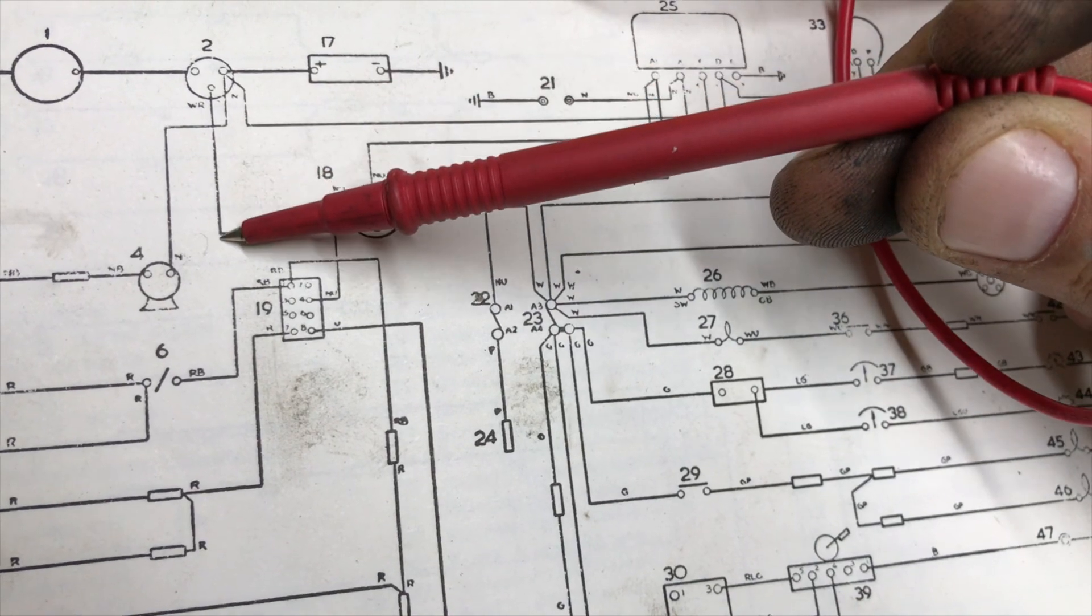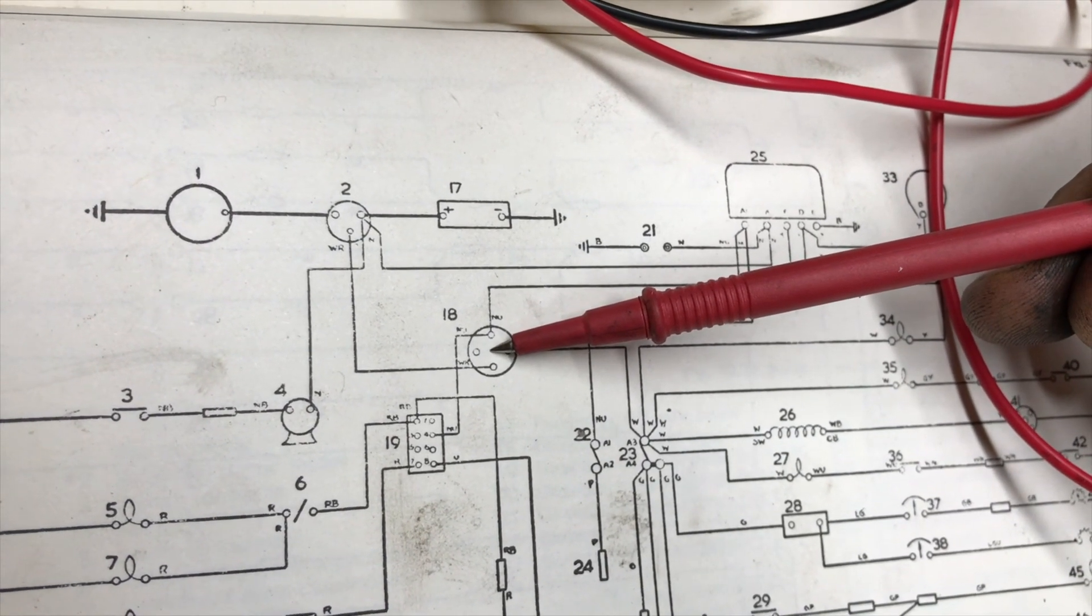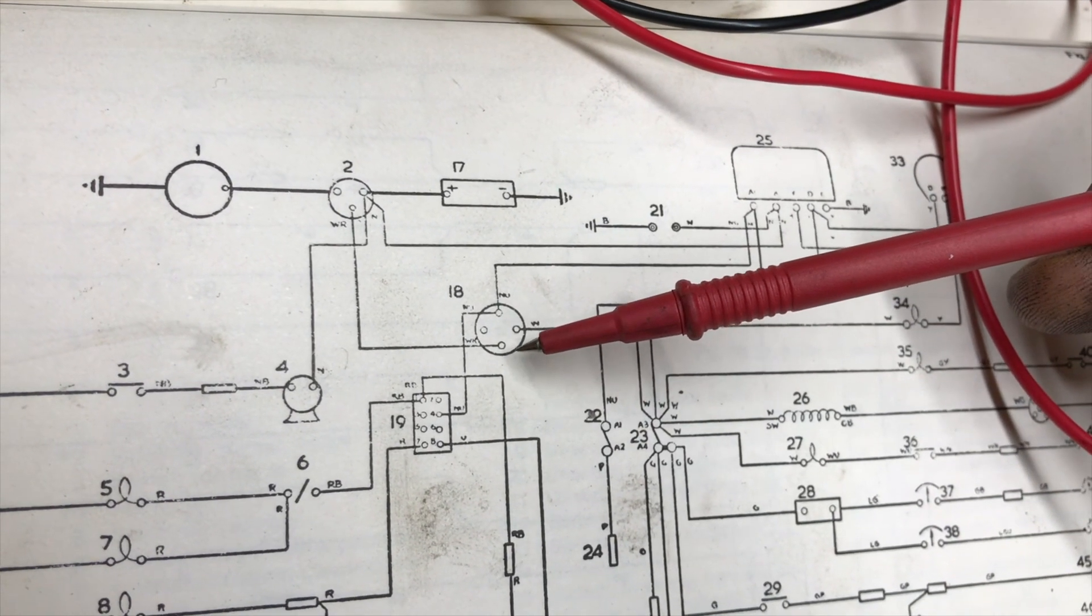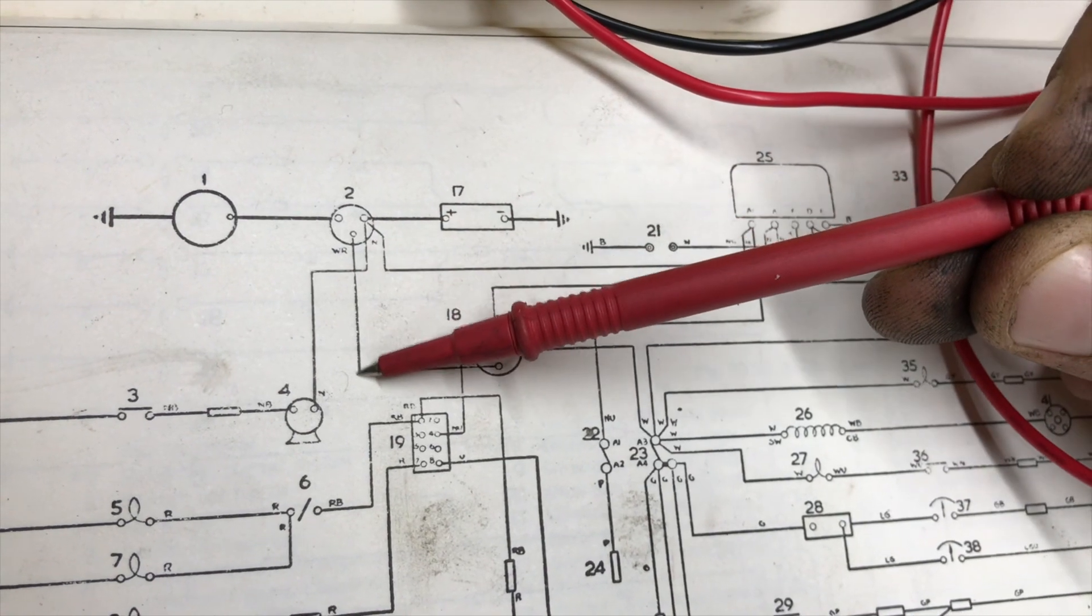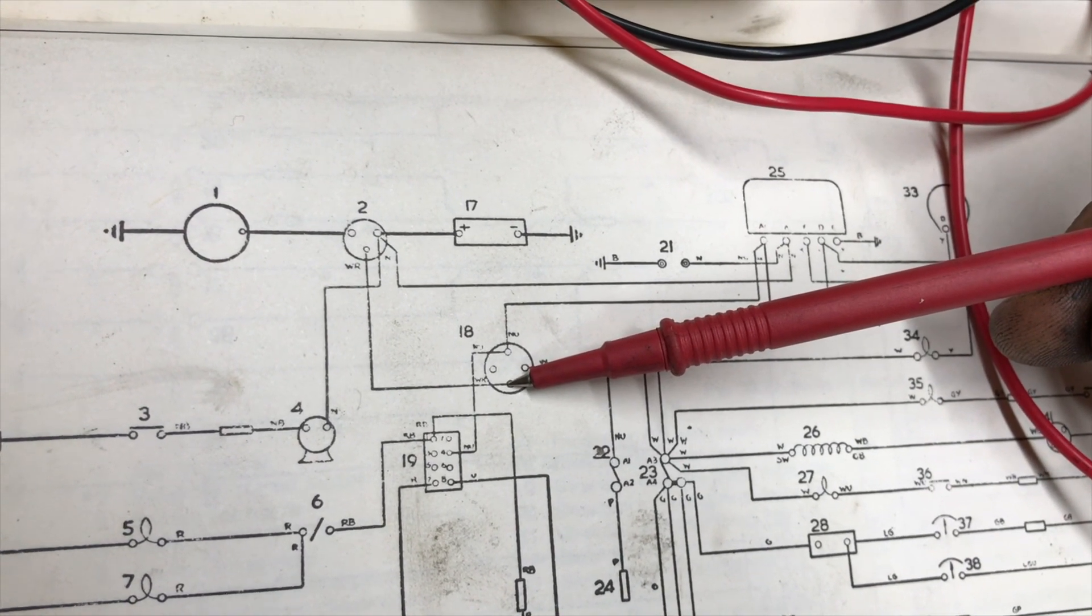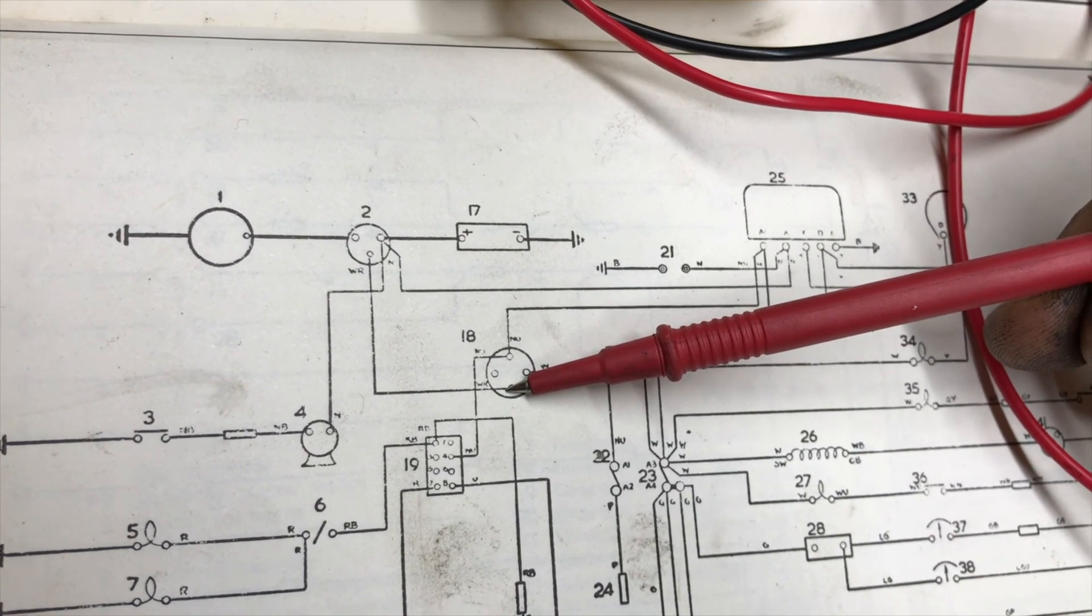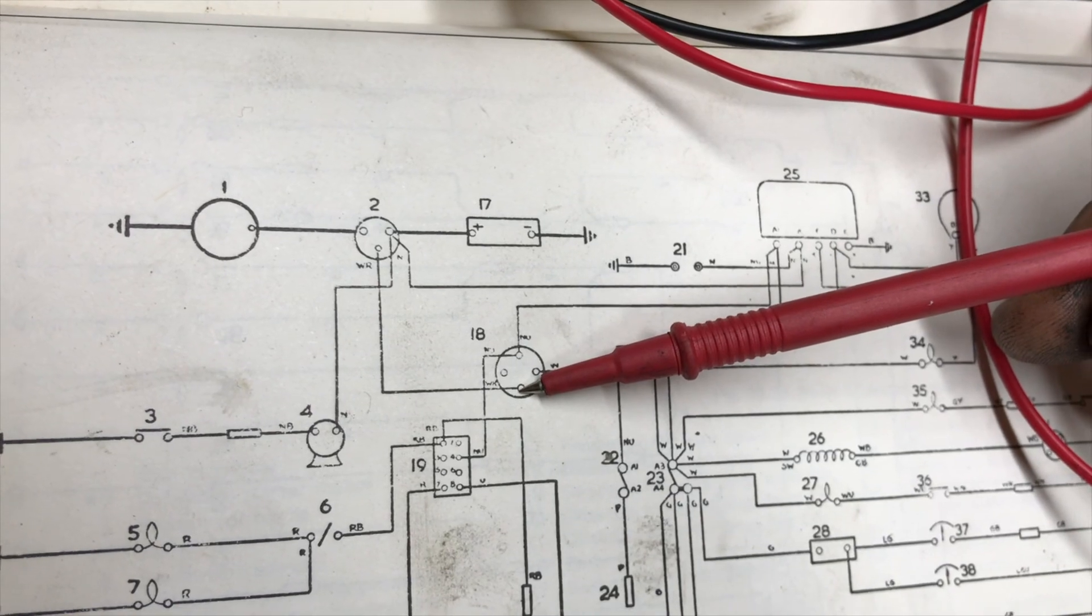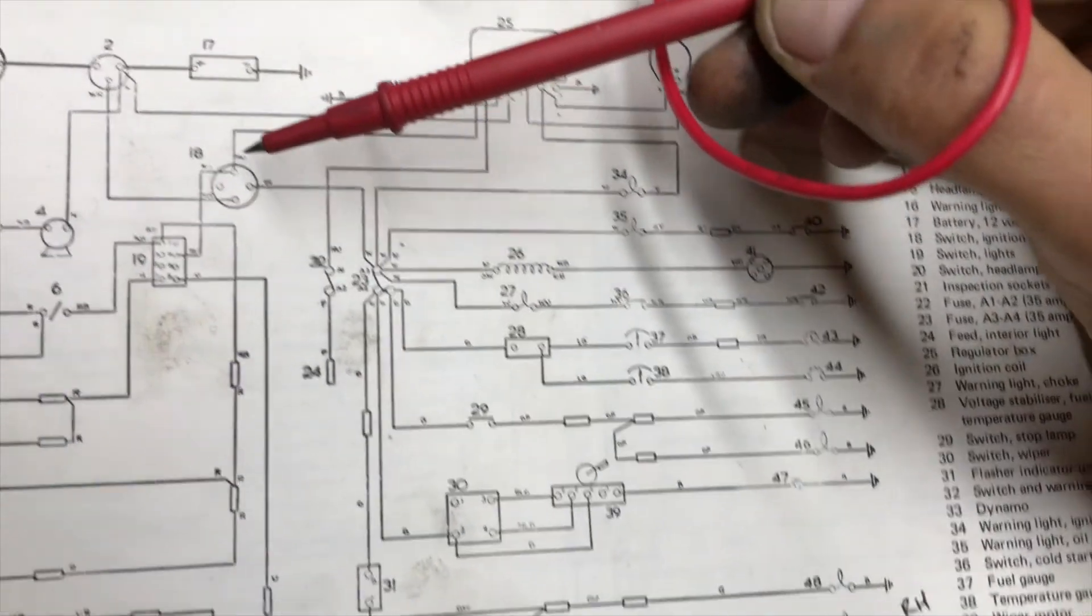I'm now at the ignition switch, so I pull the dash off. I want to find the cable that goes on the pin that should be giving 12 volts to my ignition switch. Now, the colors are long gone, so instead, I'm looking for which one, when I pull it off, the oil pressure and charge lights go out on the dash. Because that's telling me I've removed the power feed up to the dash. So I found which wire that was, and I measured the voltage in there, and that was 12 volts. So I've got 12 volts right up to the ignition switch.